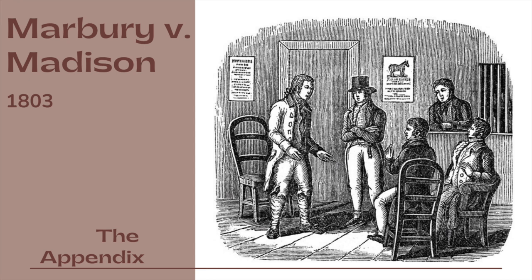It is then the opinion of the court: first, that by signing the commission of Mr. Marbury, the president of the United States appointed him a justice of the peace for the county of Washington in the District of Columbia, and that the seal of the United States affixed thereto by the Secretary of State is conclusive testimony of the verity of the signature and of the completion of the appointment; and that the appointment conferred on him a legal right to the office for the space of five years. Secondly, that having this legal title to the office, he has a consequent right to the commission, a refusal to deliver which is a plain violation of that right for which the laws of his country afford him a remedy.